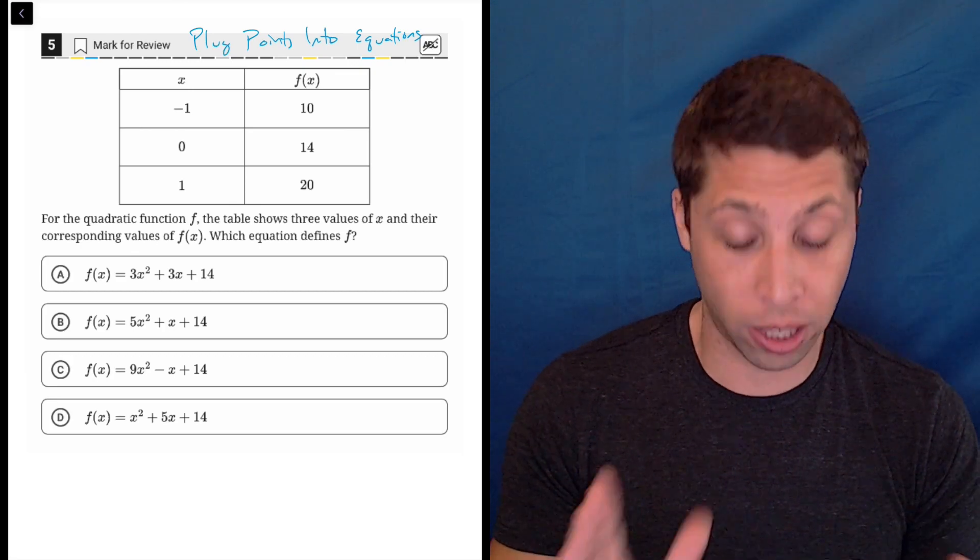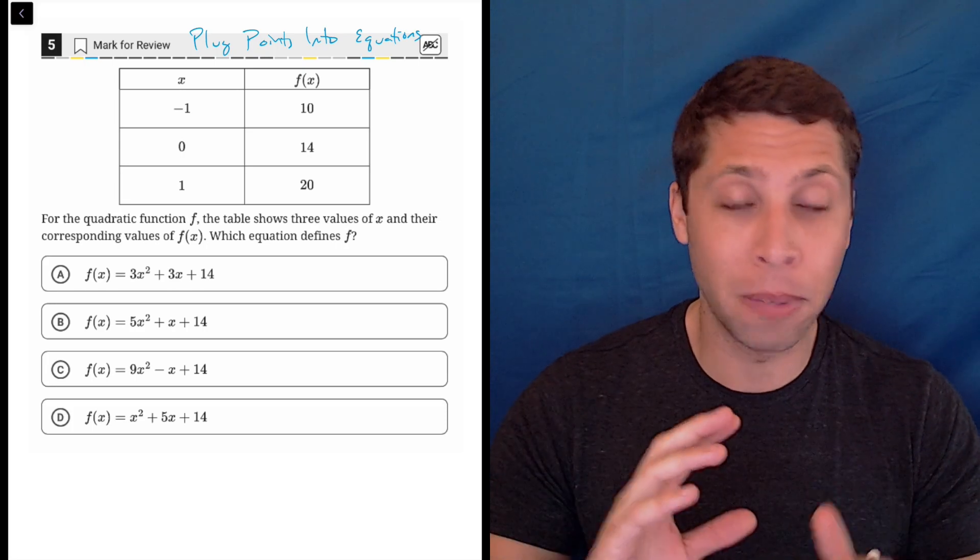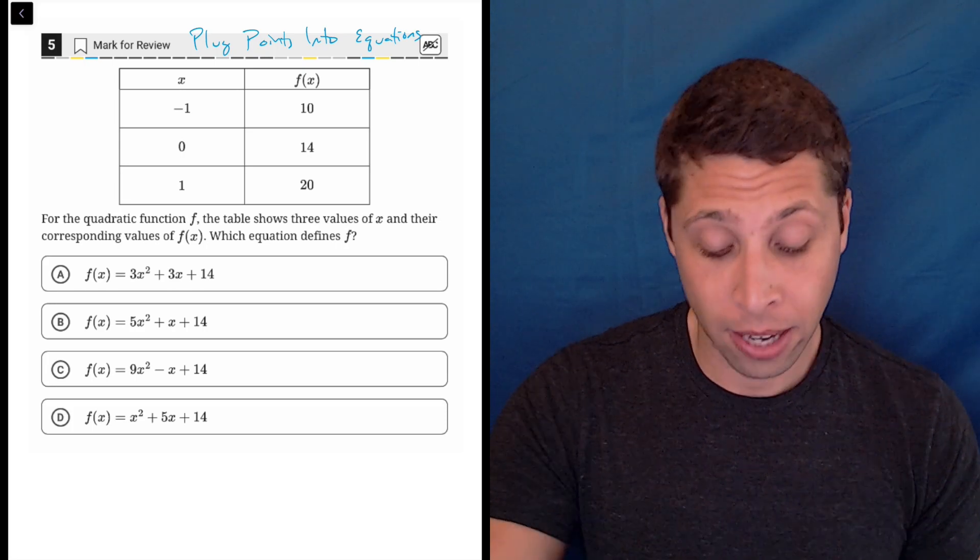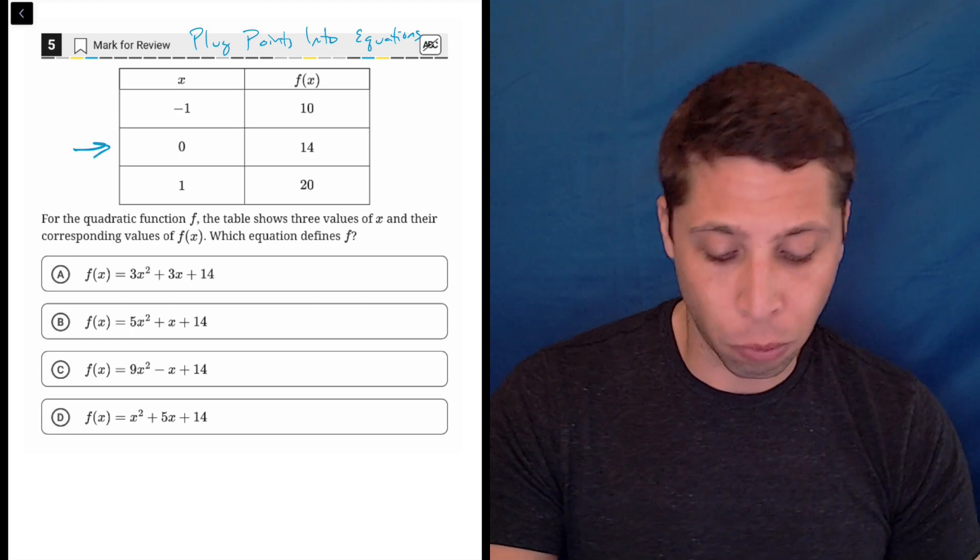There's no twist here. Notice the question - they're not saying that there's some manipulation to the equation, no translations or anything. It is just as is. So I would start with my laziest point, which is 0, 14.